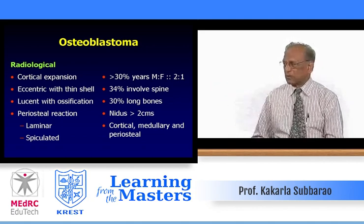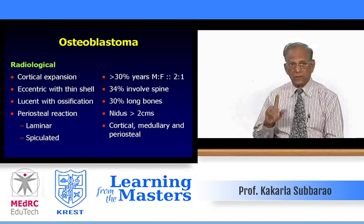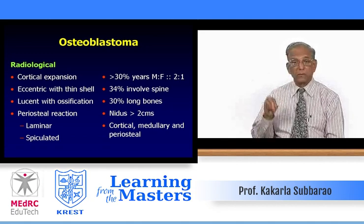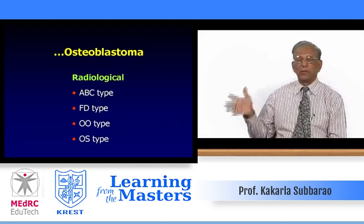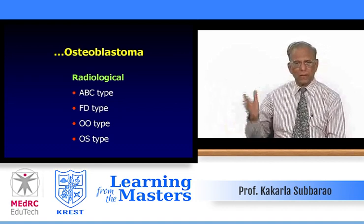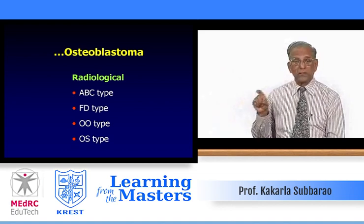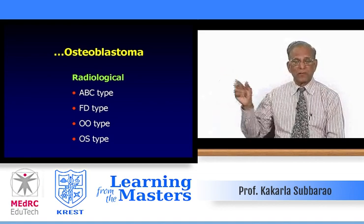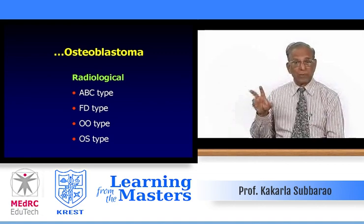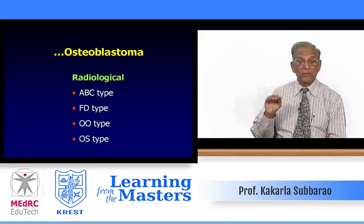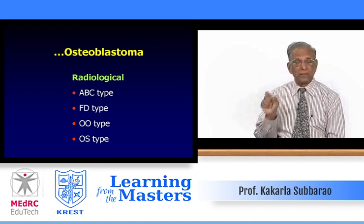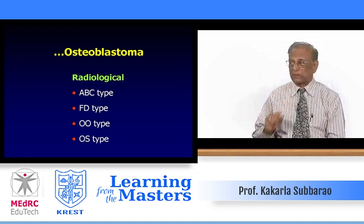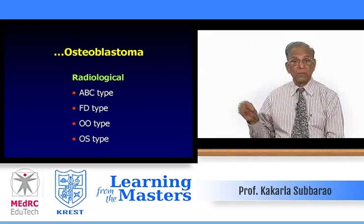The nidus in osteoblastoma is more than 2 cm. Osteoid osteoma can be cortical, medullary, or periosteal/subperiosteal. Morphologically, osteoblastoma has four types: ABC type where it is expansile; fibrous dysplasia type with a crazy ground-glass appearance; osteoid osteoma type with a nidus greater than 2 cm; and osteosarcoma type, which may be aggressive with speculated periosteal reaction and soft tissue swelling.